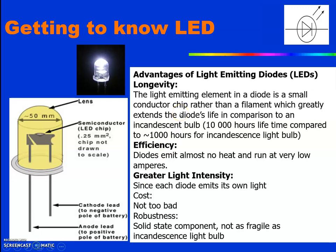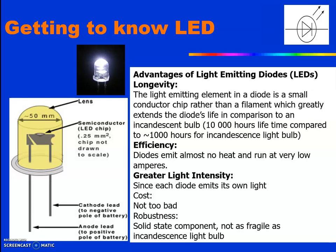The advantages of light-emitting diodes: LEDs are smaller conducting chips rather than filaments as in incandescent bulbs. Their lifetime is 10,000 hours compared to 1,000 hours for incandescent bulbs. They are highly efficient, emitting maximum light with no heat, and run at very low voltages and currents. The intensity is brighter, the cost is very low, and they are solid-state components — not fragile like an incandescent lamp.